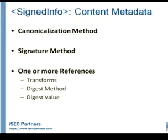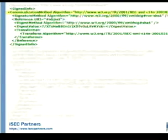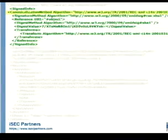The contents of signed info are a canonicalization method, the signature method used to sign the metadata itself, and some references describing the material that's being signed. For the canonicalization method here, we're using exclusive — the basic XML canonicalization.